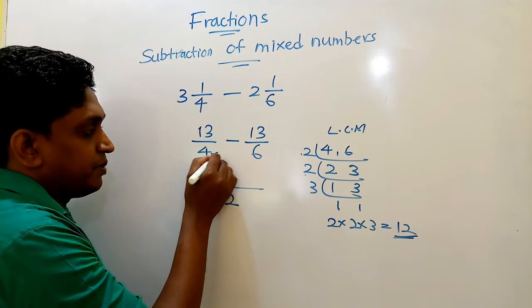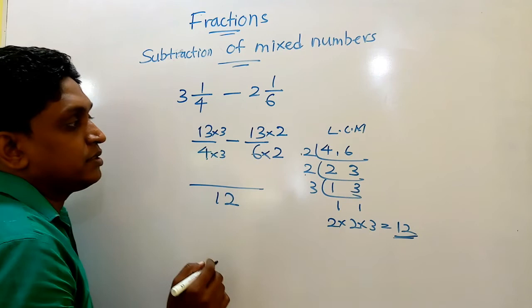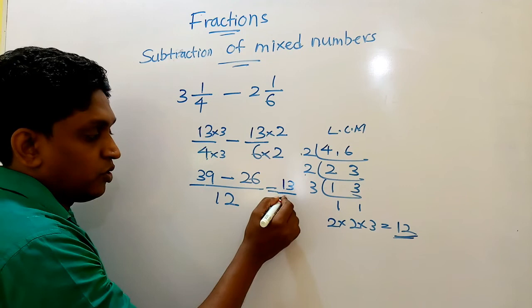Now apply that LCM to get answers. So 4 to make 12, multiply 4 by 3 and 13 also by 3. To make 6, 12, multiply 6 by 2. So 6 by 2 and 13 also by 2. Then 13 times 3, 39. Minus 13 into 2 is 26. So answer now, 39 minus 26 means 13.